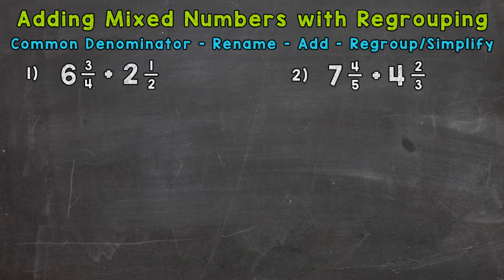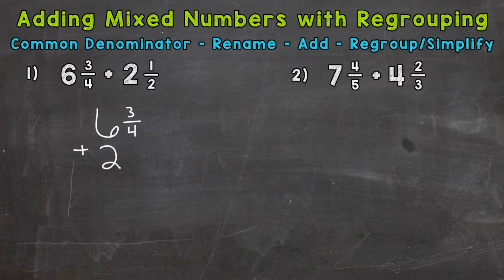Let's jump into number one, where we have six and three-fourths plus two and a half. The first thing I like to do is rewrite the problem vertically, so up and down. Six and three-fourths plus two and a half. So I have my fractions lined up and my whole numbers lined up. Now we can go through our process.